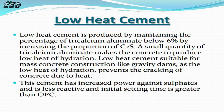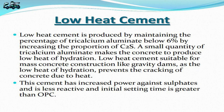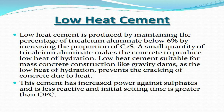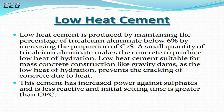Low Heat Cement is produced by maintaining the percentage of tricalcium aluminate below 6% by increasing the proportion of C2S. A small quantity of tricalcium aluminate makes the concrete produce low heat of hydration. Low Heat Cement is suitable for mass concrete construction like gravity dams, as the low heat of hydration prevents the cracking of concrete due to heat. This cement has increased resistance against sulfates, is less reactive, and has an initial setting time greater than OPC.